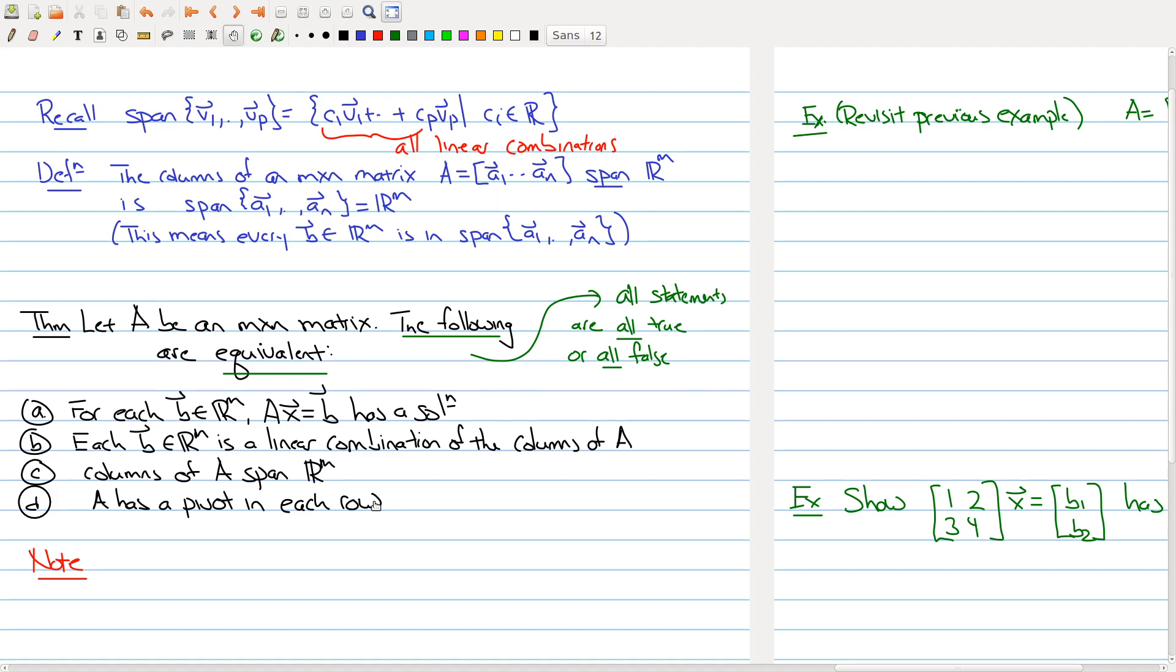which is that A has to have a pivot in each row. So the question we asked, when does Ax equal b have a solution? You can boil it down to just row reducing your matrix and then looking at the pivots. Do you have a pivot in each row? Yes. Well, then you have a solution to every b. Is there a row that's missing a pivot? Well, then there are some b for which you can't find a solution.